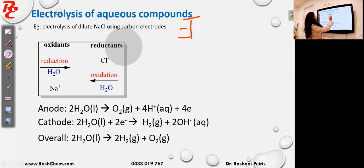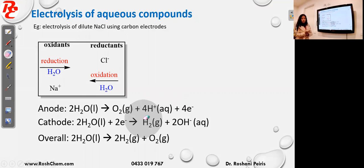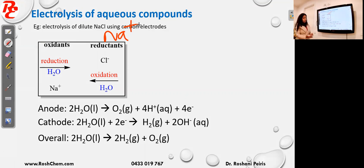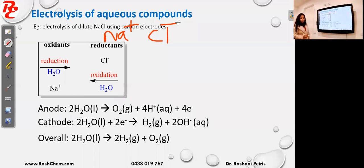Now we will look at the electrolysis of aqueous compounds, which means we have water with these compounds — this compound is dissolved in water. I have taken as the example dilute sodium chloride solution. When you make your list you have Na⁺ and Cl⁻, but not only these two — you also have water now.